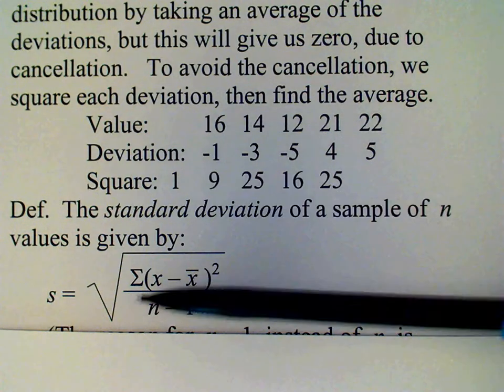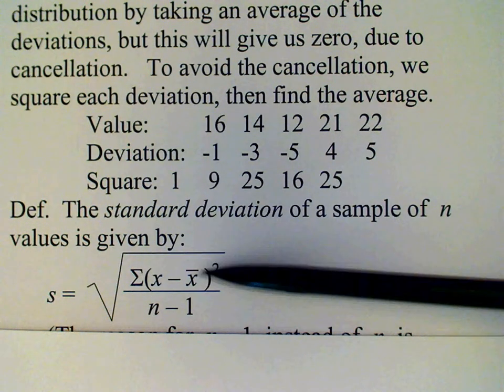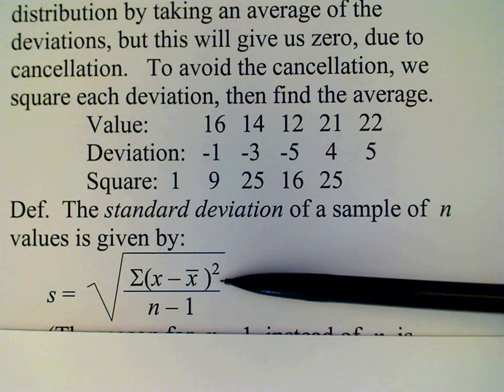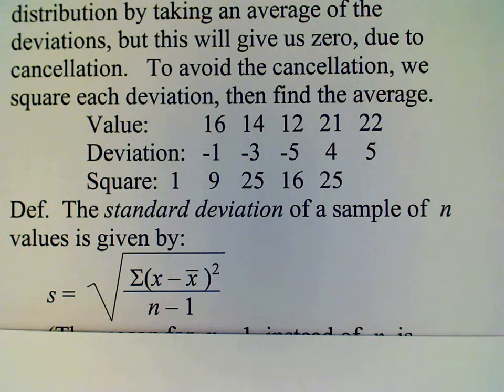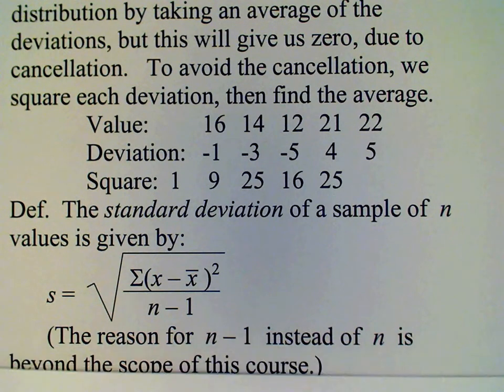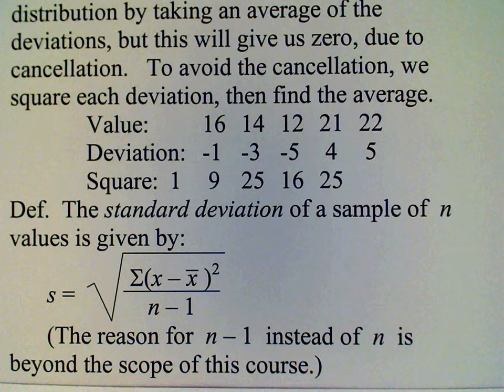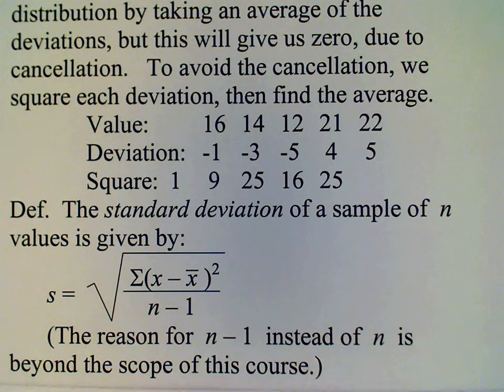So remember to do that, we have to add up all of the squares of the deviations and then divide by n minus one. Now some of you are going to say, well, why are you dividing by n minus one instead of n? And I cannot really explain that very well because the reason for this is beyond the scope of this course.